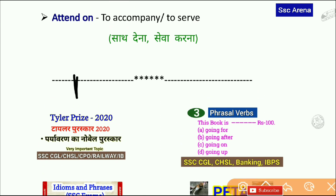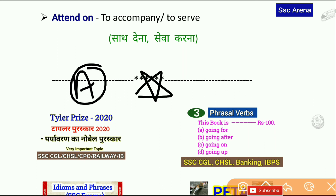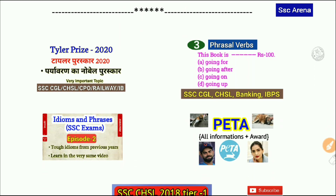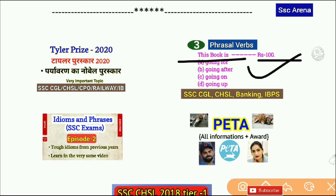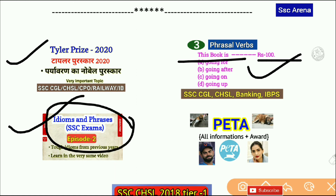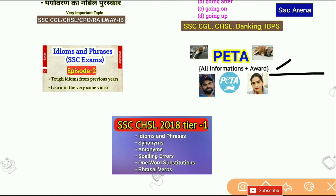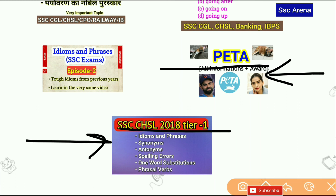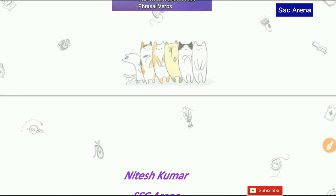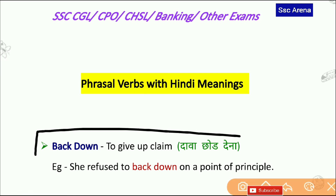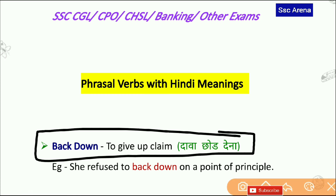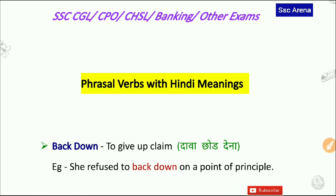दोस्तों, A से related phrasal verbs मैंने cover कर दिये हैं। इसके बाद B alphabet से related भी करवाऊंगा। साथ ही phrasal verbs के quizzes भी देता रहता हूँ — जैसे 'The book is dash rupees 100'। इसके अलावा idiom and phrases, CHSL tier 1 के idioms, phrases, synonym, antonym — सारा cover करवाया हुआ है। Please SSC Arena को subscribe करें, दोस्तों को share करें, और video को like करें। वीडियो देखने के लिए आप सभी का बहुत बहुत धन्यवाद।